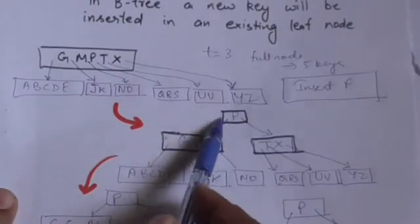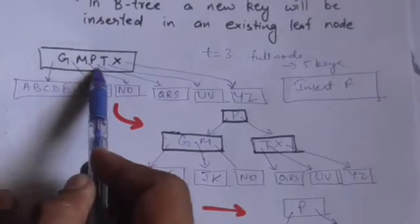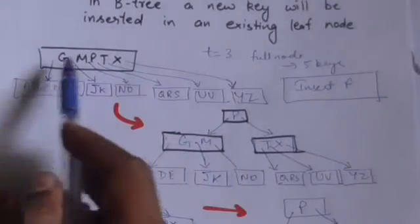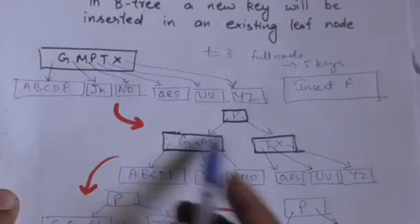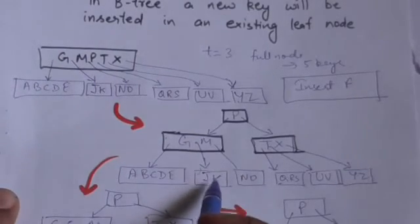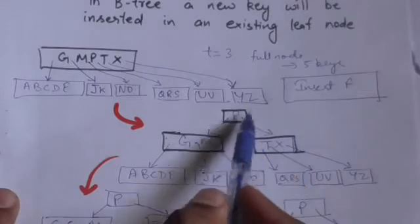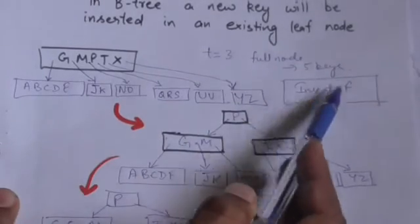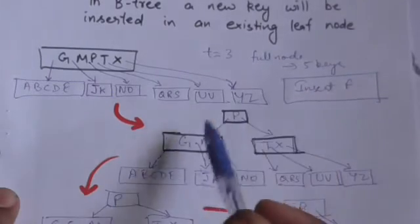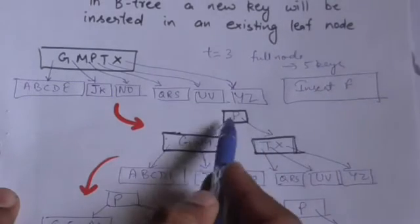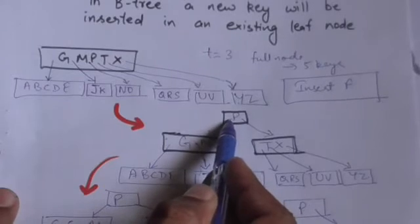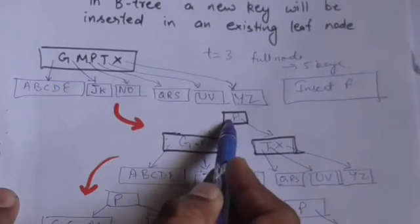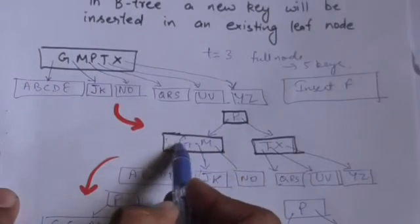After splitting the root, the node containing only the key P has become the new root node of this B-tree. Now, key F is smaller than key P, so we will move to the child which is at the left of key P.